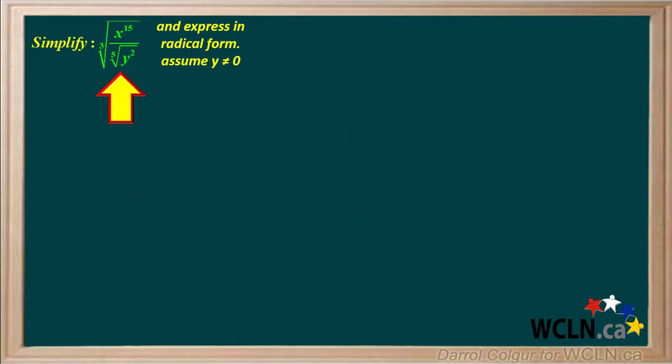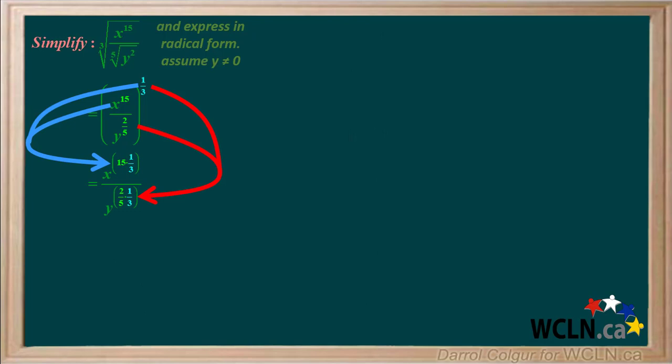We're given this complex looking expression and we're asked to simplify it and express the answer in radical form. We assume that y is not equal to zero. We convert the expression to exponential form. The 5th root of y squared is y to the two-fifths. Taking the cube root of x to the 15th over y to the two-fifths is the equivalent of raising it to the power of one-third. Applying the power rule for a quotient gives us x to the power of 15 times one-third over y to the power of two-fifths times one-third.